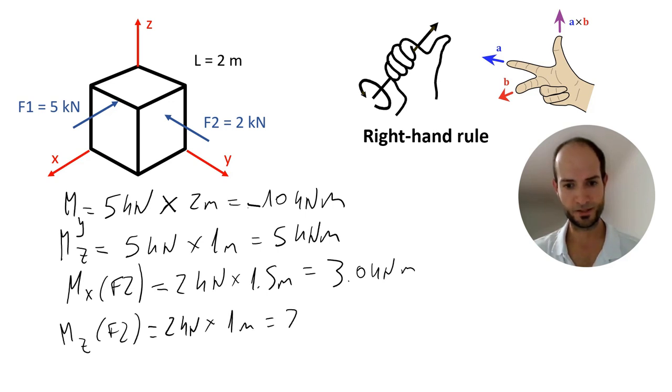Now, Mx, with the right hand, it's going anticlockwise, with the thumb pointing on the positive side of the X axis, so positive. And, for Mz, we have going clockwise, and the thumb is pointing down. So, it's negative.